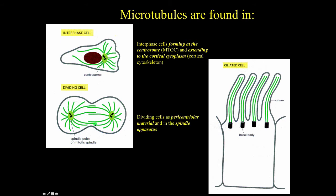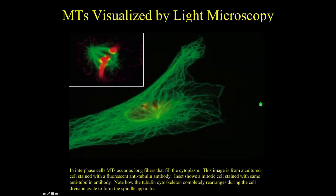Microtubules are also found in dividing cells as pericentriolar material and in the spindle apparatus. In ciliated cells, the basal body serves as the microtubular organizing center for microtubules extending up into the cilia. Here we show microtubules visualized by fluorescence microscopy.